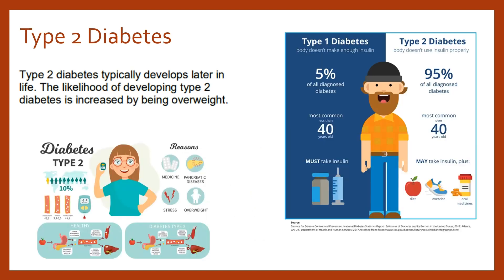The other type is type 2 diabetes, and it's more typical for that to develop later in life, and more typical as well if the individual is overweight. Remember, these are just typical profiles. Type 1 diabetes could be diagnosed later in life, and type 2 diagnosed earlier.